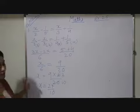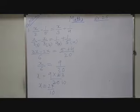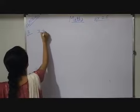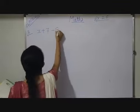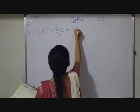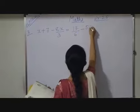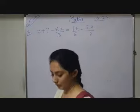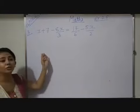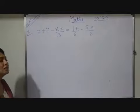Now next question here I will solve. Here third question of your exercise is x plus 7 minus 8x upon 3 which is equals to 17 by 6 minus 5x by 2. So again what you will do? Collect one side variable another side numbers.